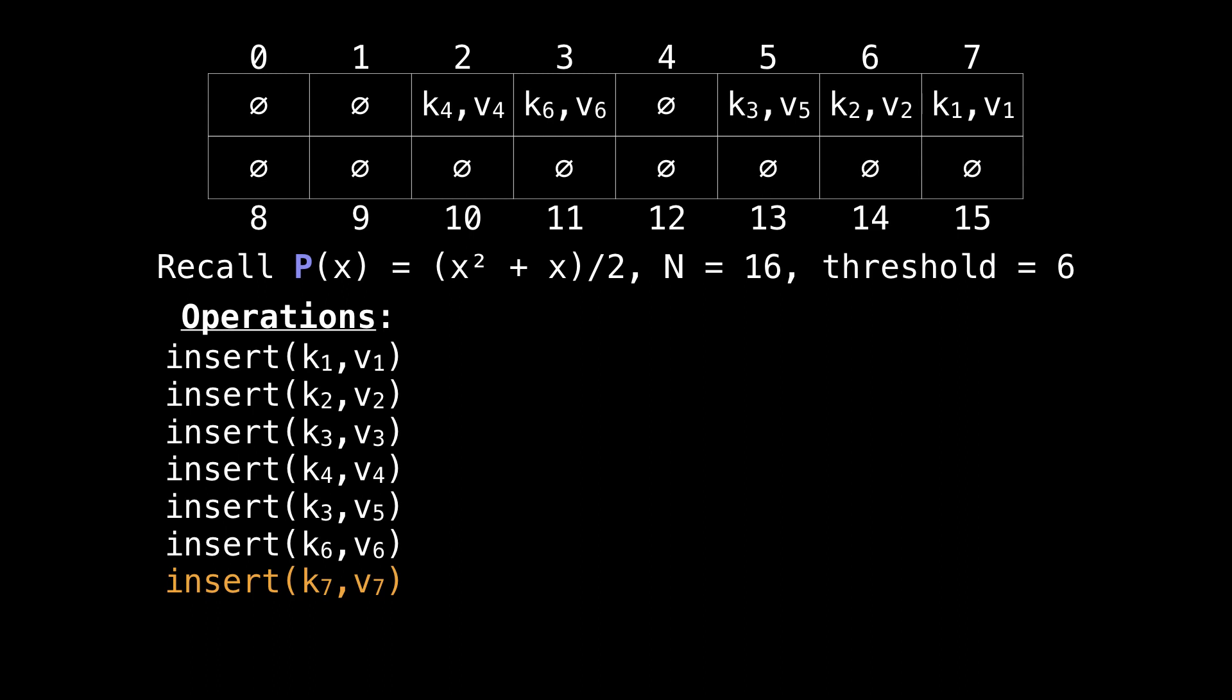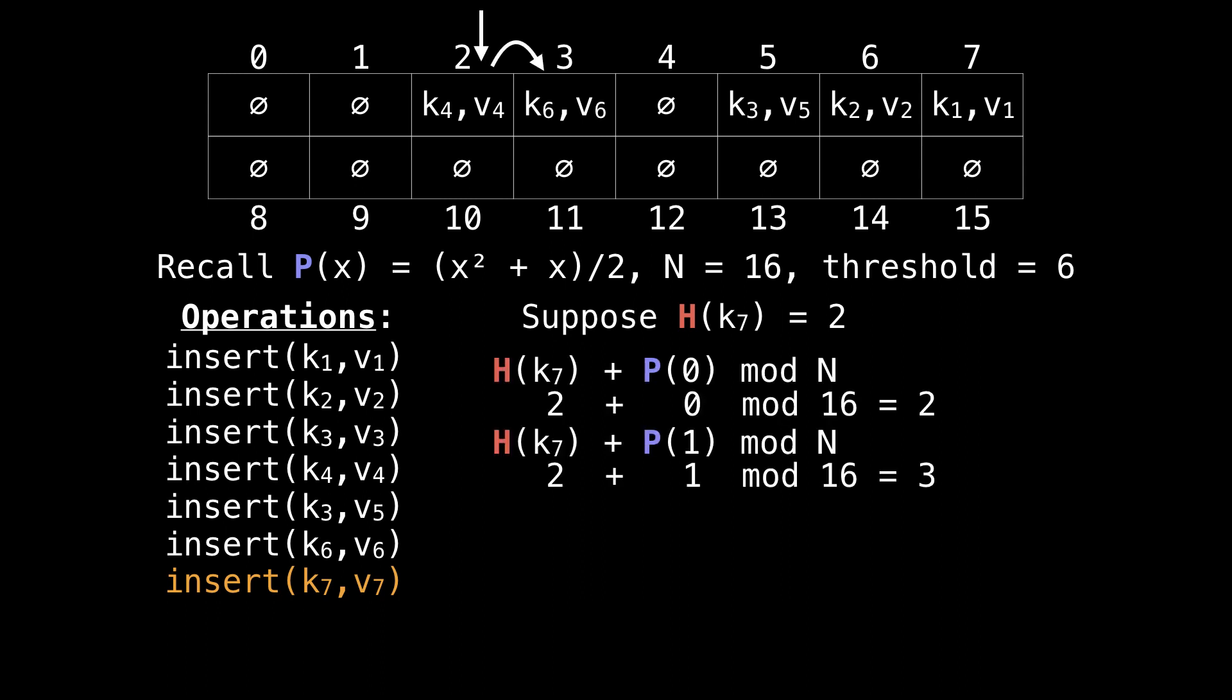And the last one, k7, suppose it hashes to 2. But we have a collision right there, so let's probe along. When we probe, our probing function gives us an offset of 1. That's also taken, so probe again. Now we are at position 5, but that's also taken.